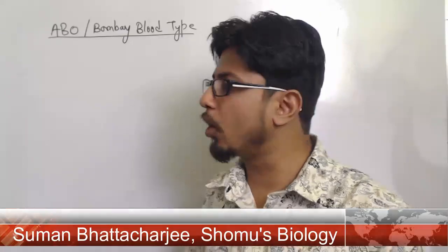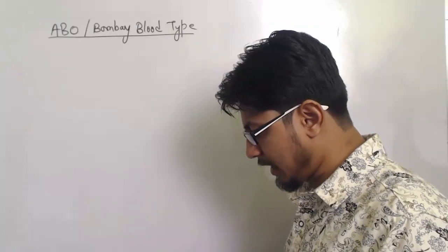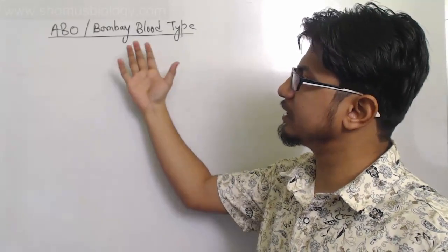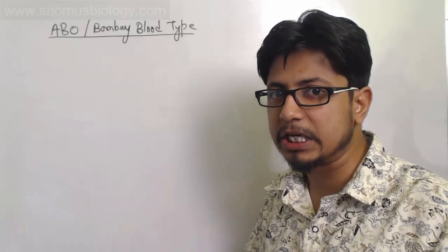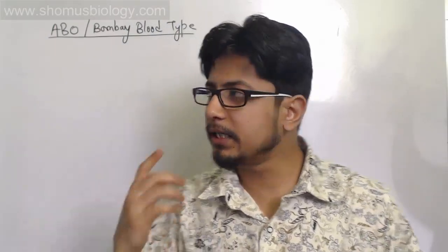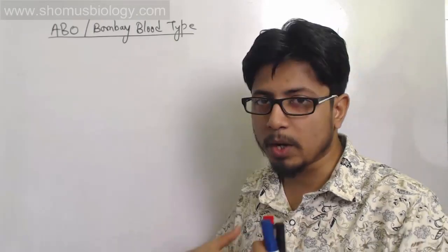Welcome back friends, welcome to another video tutorial from Somos Biology. Today we want to talk about a very interesting concept: the difference between ABO blood type and Bombay blood type. I'm going to talk about what Bombay blood type is, and then the differences between the two. Bombay blood type is a very rare blood type, found in one out of one million people around the world. It was first found in a person from Bombay, now called Mumbai — that's why we call it Bombay blood type.